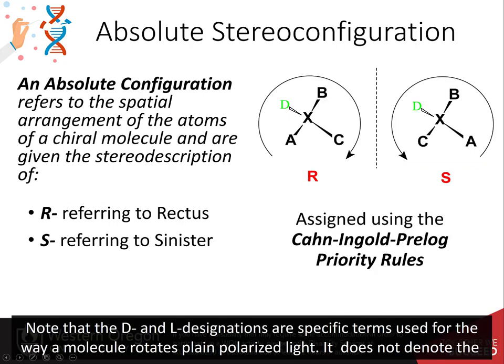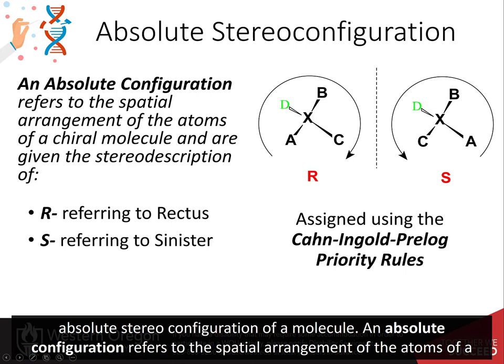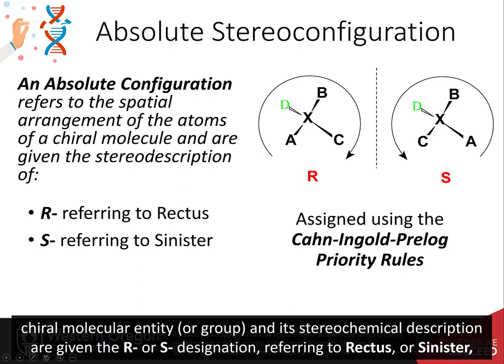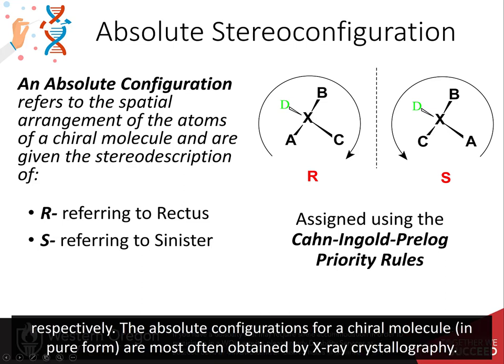Note that the D and L designations are specific terms used for the way a molecule rotates plane-polarized light. It does not denote the absolute stereoconfiguration of a molecule. An absolute configuration refers to the spatial arrangement of the atoms of a chiral molecule or entity or group and its stereochemical description. These are given by the R or S designation, referring to rectus or sinister, respectively.